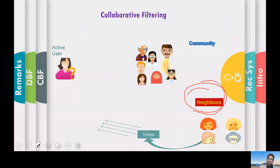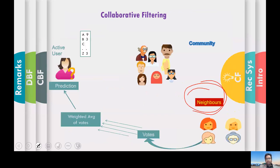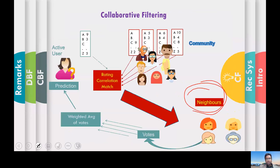In the first step, we find similar users to the active user, which are also called neighbors of the active user. Based on these neighbors' opinions or votes, we can predict how the active user will like or dislike a certain item. To find similar users, you have the profile of each user in the database.